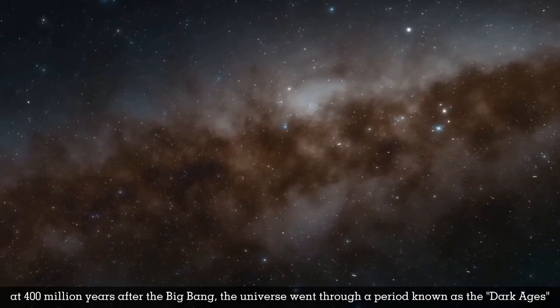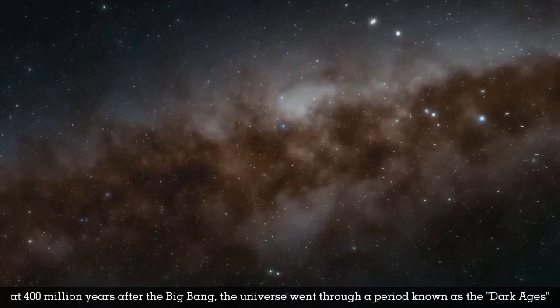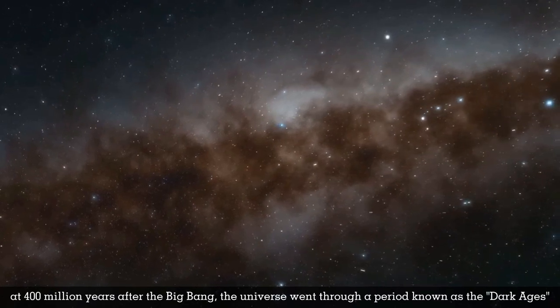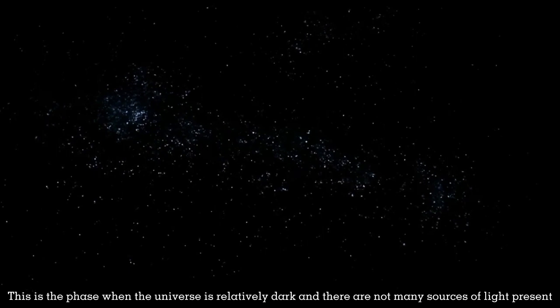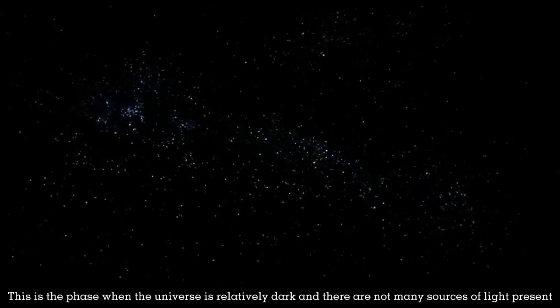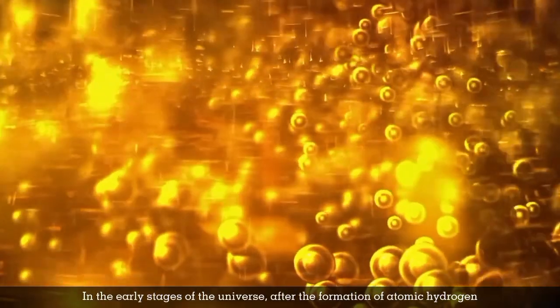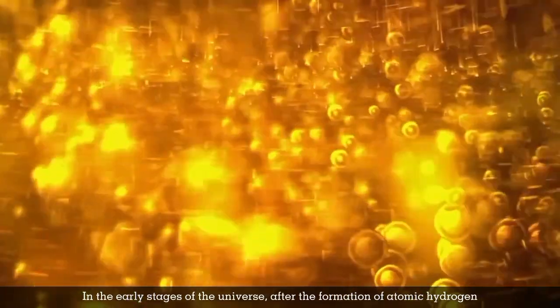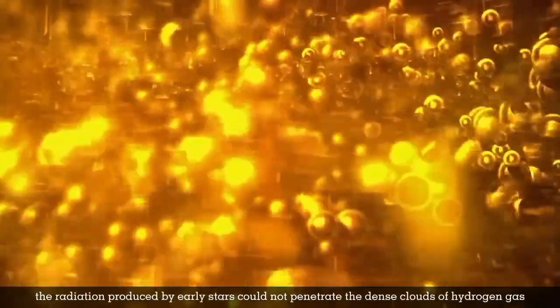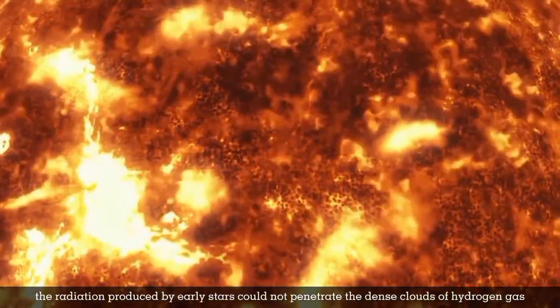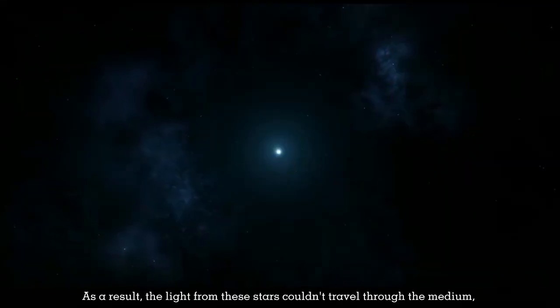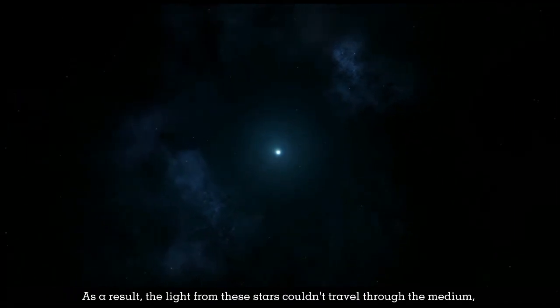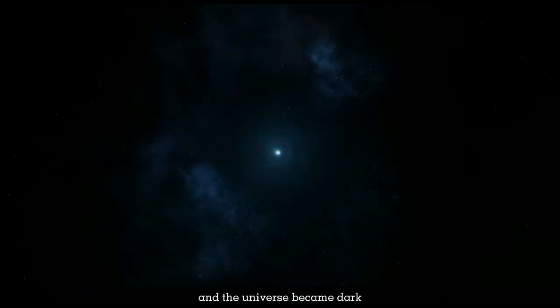At 400 million years after the Big Bang, the universe went through a period known as the dark ages. This is the phase when the universe is relatively dark and there are not many sources of light present. In the early stages of the universe, after the formation of atomic hydrogen, the radiation produced by early stars could not penetrate the dense clouds of hydrogen gas. As a result, the light from these stars couldn't travel through the medium, and the universe became dark.